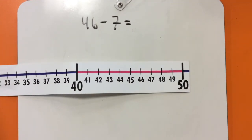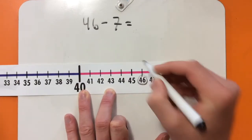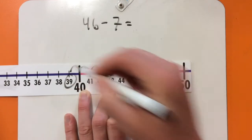For this problem, we're going to start at 46. So, I will circle 46, and we'll count back 7: 1, 2, 3, 4, 5, 6, 7, 39.